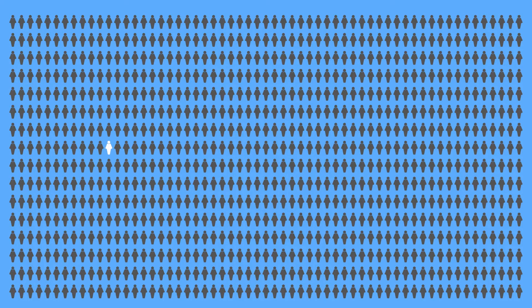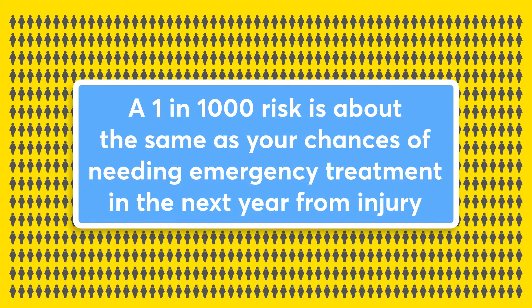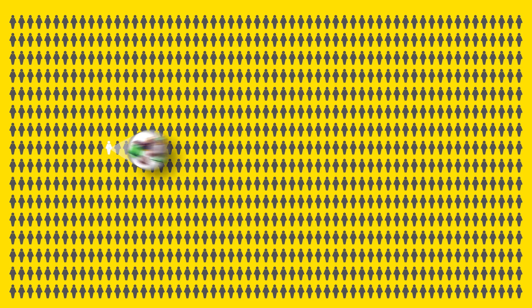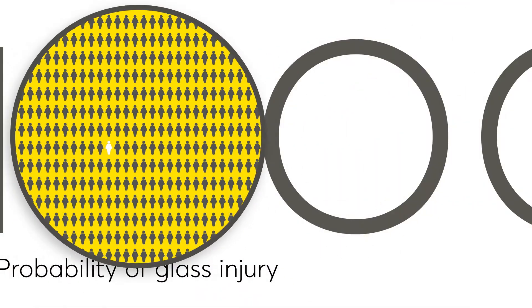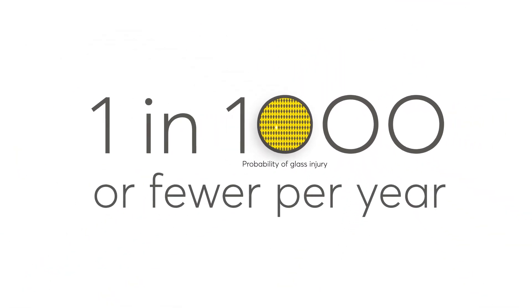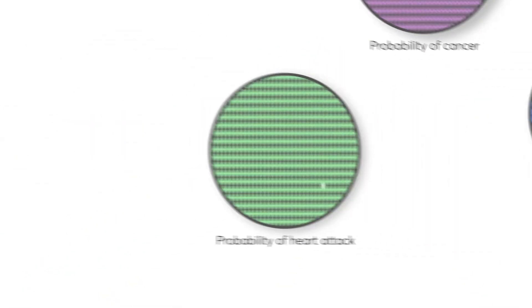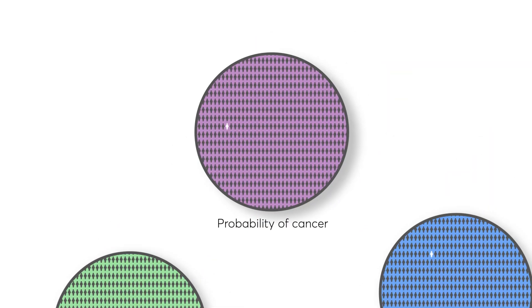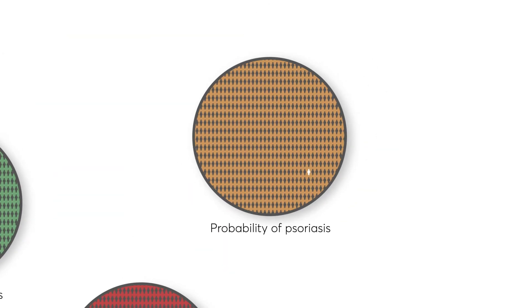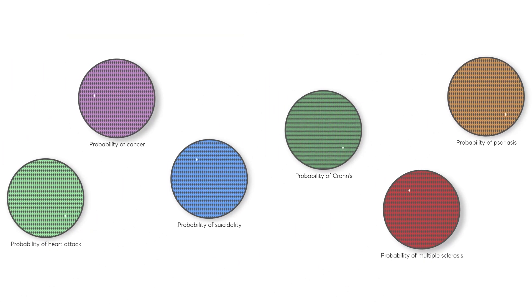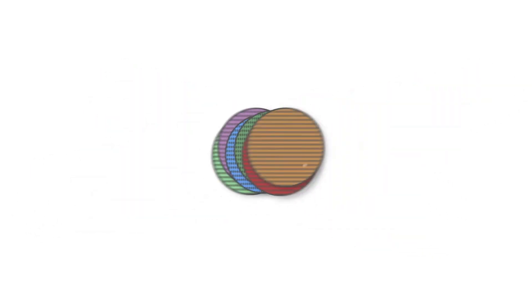Initial trials often cannot detect rare adverse events that occur in fewer than 1 in 1,000 patients. To give you an idea, a 1 in 1,000 risk is about the same as your chances of needing emergency treatment in the next year from injury by a glass bottle or jar. However, statistically rare effects which occur in 1 in 1,000 patients or fewer per year can include heart attacks, cancer, suicidality, or inflammatory diseases such as Crohn's, multiple sclerosis, or psoriasis, and therefore are important to consider, especially when a drug is intended to be used in hundreds of thousands of patients.